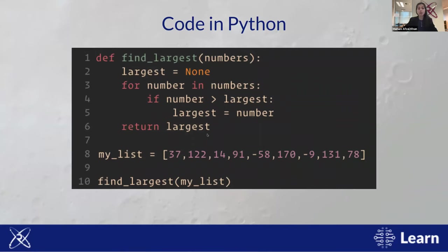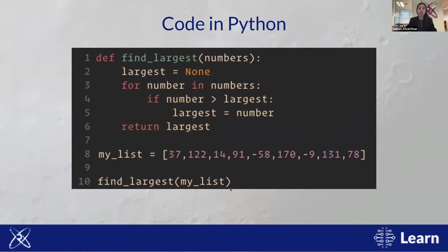At this point, we've only defined the function — we haven't told the computer to execute it or given it a list. This is like writing down a recipe but not making it. When we do want to use this function, we first define the list of numbers in line 8, stored in a variable called 'my_list.' Then in line 10, we call the function 'find_largest' and pass it 'my_list' as the input — that is where we actually tell the computer to run the function.